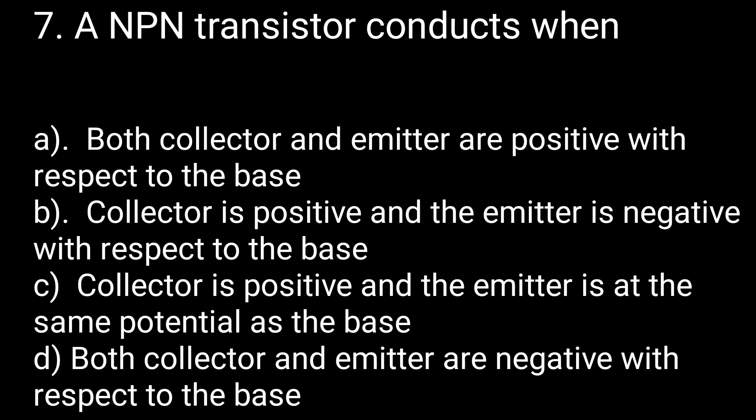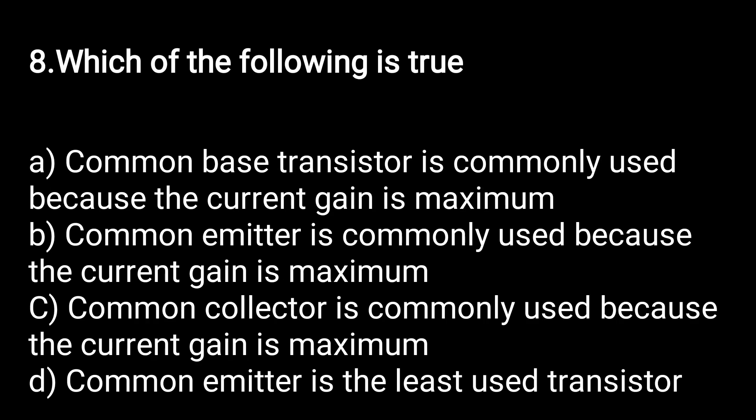Next question: when does an NPN transistor conduct? Options are: both collector and emitter positive w.r.t. base; collector positive and emitter negative w.r.t. base; collector positive and emitter at same potential as base; or both negative. The answer is option B: the NPN transistor conducts when the collector is positive and the emitter is negative with respect to the base. For a PNP transistor, the opposite is true — collector negative and emitter positive.